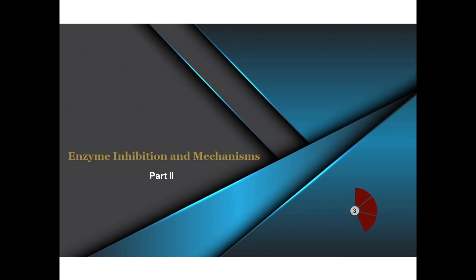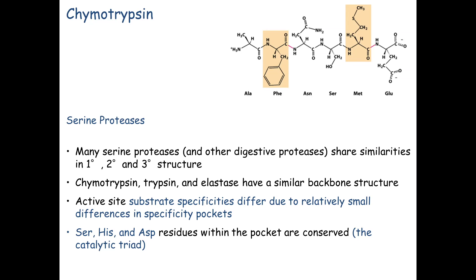I'd like to complete the enzyme inhibition and mechanisms talk by discussing proteases and variation in how their reactions take place. The prototypical enzyme we'll talk about is a serine protease, and the example we'll use is chymotrypsin. All serine proteases share some things in common: they are proteases, they digest other proteins, and they cleave certain peptide bonds.